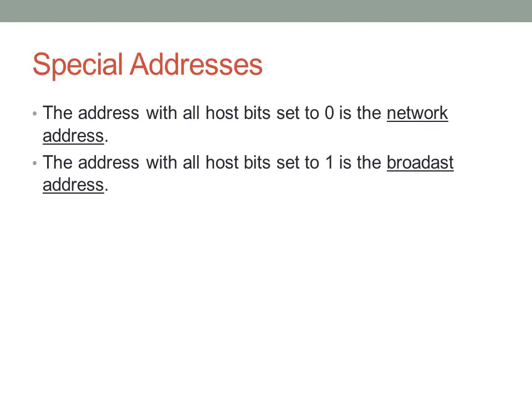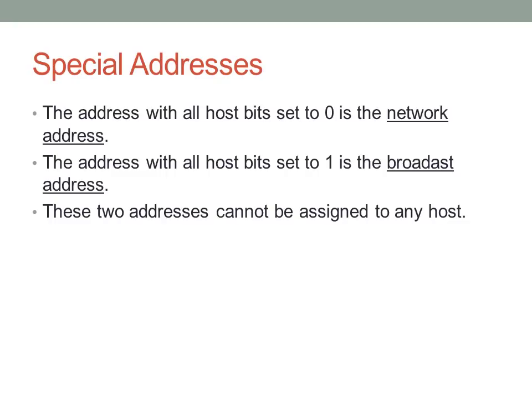Another important address is the one where all the host bits are set to one — this is considered the broadcast address. Using that same example, Wichita State's broadcast address would be 156.26.255.255, setting all of those host bits to one. Neither of these two addresses can be assigned to any particular host on the network. They're reserved for special purposes: the network address for network identification, and the broadcast address for broadcast communication between hosts in the same network.